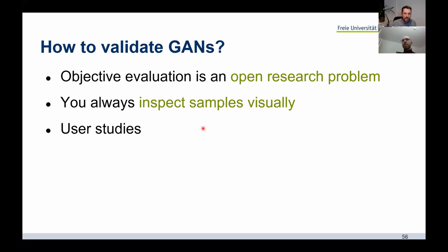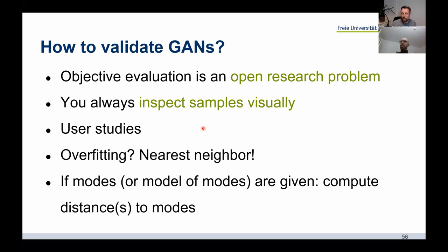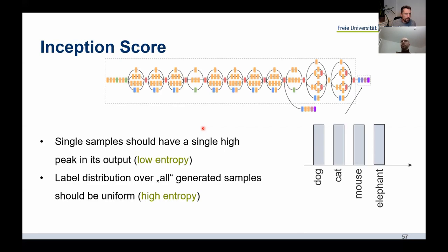To check for overfitting — the generator learning specific examples by heart — you can look at nearest-neighbor matches of generated samples to samples in your dataset. If you have labels, you can compute heuristics to know whether a mode has been lost. We also have the inception score: at least in the image domain, we can quantify how well the generator generates samples. This relates to two dimensions: you want samples to have low entropy — it should be clear to an interpreter that the sample is something meaningful.